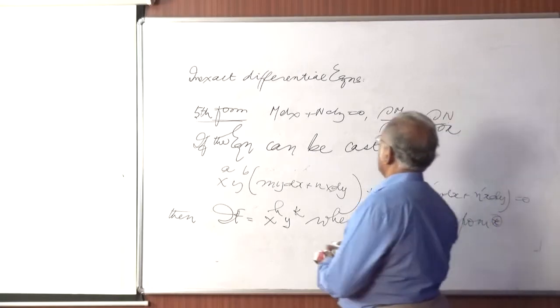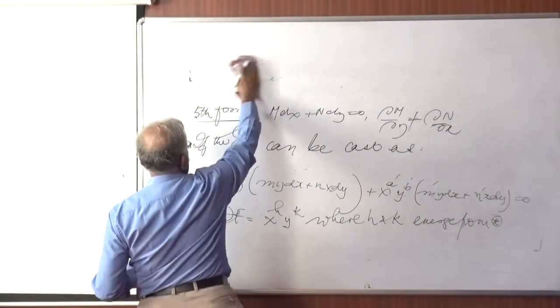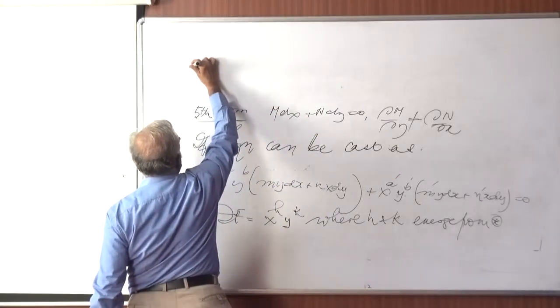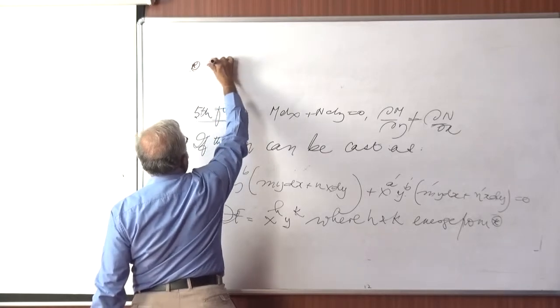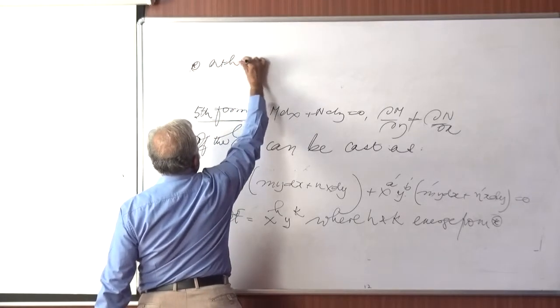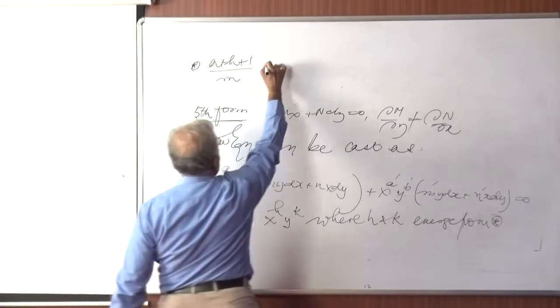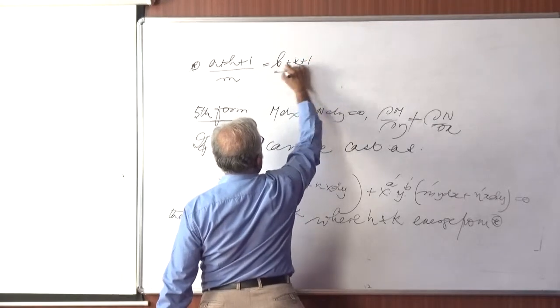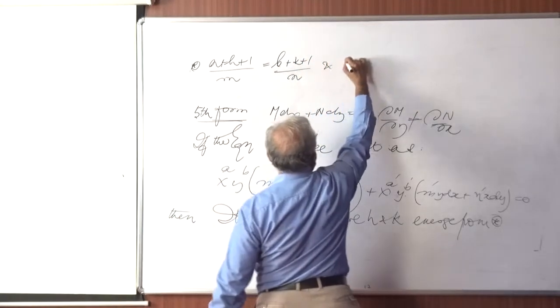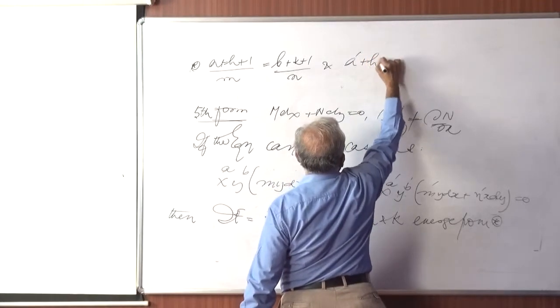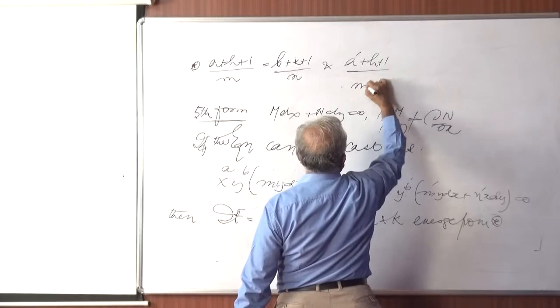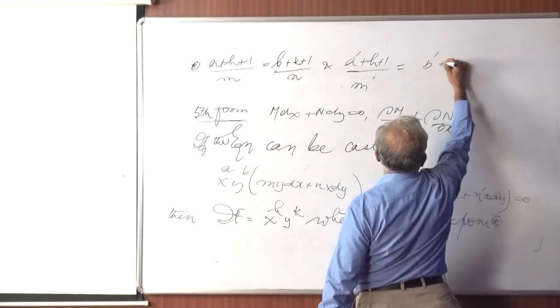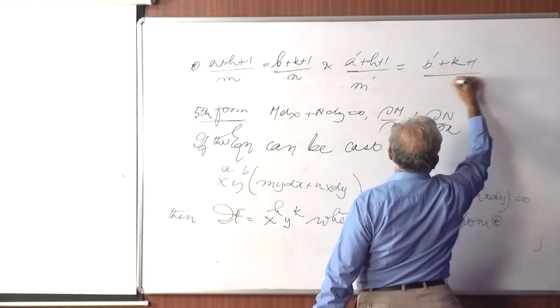h and k emerge from these equations. (a + h + 1)/m = (b + k + 1)/n, and (a' + h + 1)/m' = (b' + k + 1)/n'.